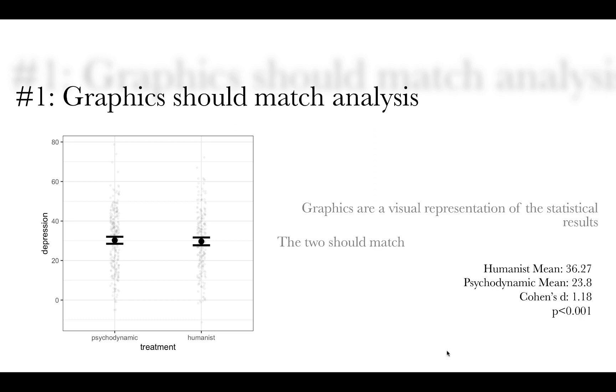So in this example, I am showing a bad graphic where somebody is looking at the relationship between treatment or the orientation of their therapist and their depression. And what they have done statistically is they have controlled for socioeconomic status in the background, but it's nowhere on here. And so they're just plotting the raw means of these two things. And so if they were to report the results of the ANCOVA, maybe the humanist mean is 36, the psychodynamic mean is 23, and Cohen's D is 1.18, you might be looking at the graphic and saying, what? That doesn't look like it's statistically significant. And you might even be as nitpicky as looking at the mean here and saying that value is nowhere near 23. It's more like 30. What's going on here? Well, that's because the graphic doesn't match the analysis.